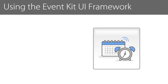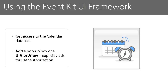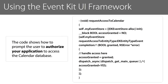Once your application can access a user's calendar and reminders, the next step is to get access to the calendar database. To do this, you need to request permission from the calendar database. You can add a pop-up dialog box or a UI alert view. When a user runs your application, this dialog box or UI alert view will appear that explicitly asks for user authorization to access the calendar database. This code shows how to prompt the user to authorize your application to access the calendar database.